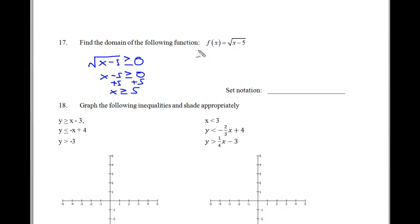So, to solve these problems, since square roots have to be greater than or equal to 0, you would set whatever is inside greater than or equal to 0 and solve for x. So, my notation here is going to be x has to be greater than or equal to 5, like so.